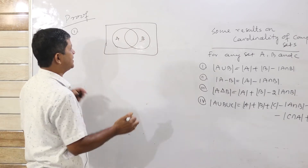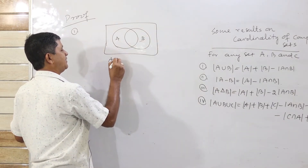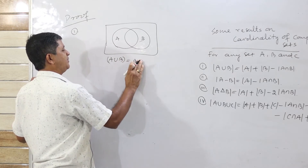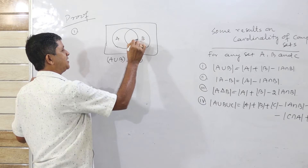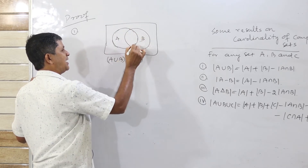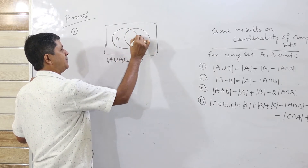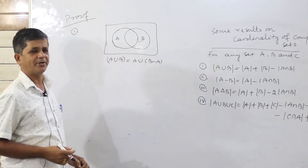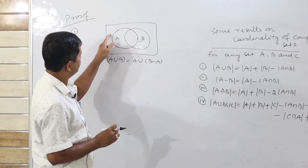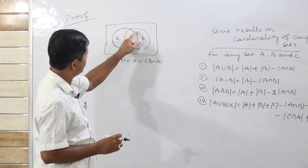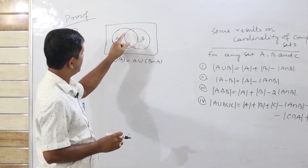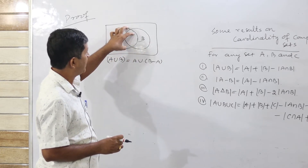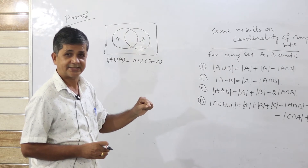We break A union B into the union of two disjoint sets: A and B difference A. Here A and B difference A together make up A union B, and these two sets share no common elements.